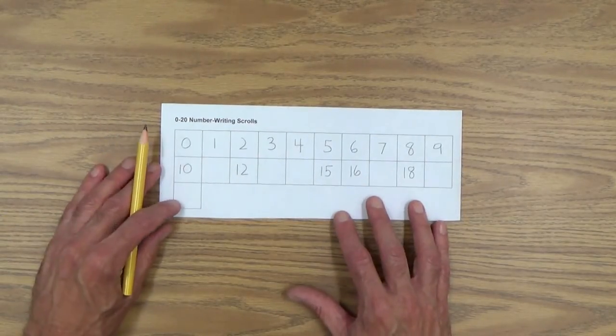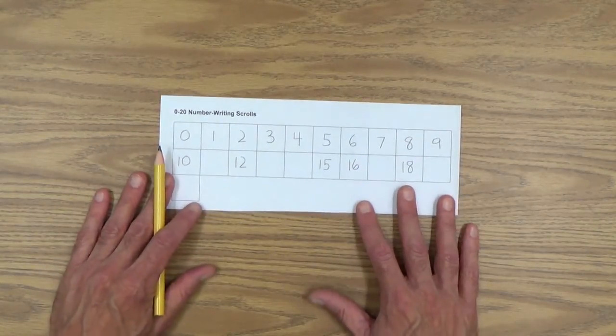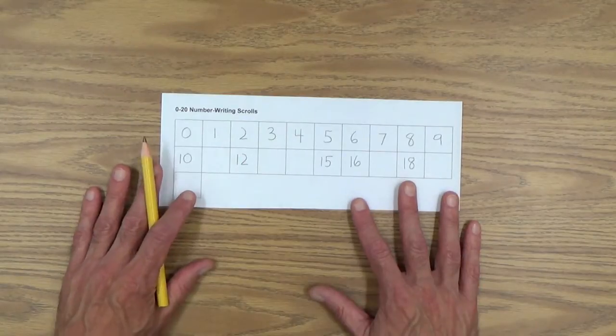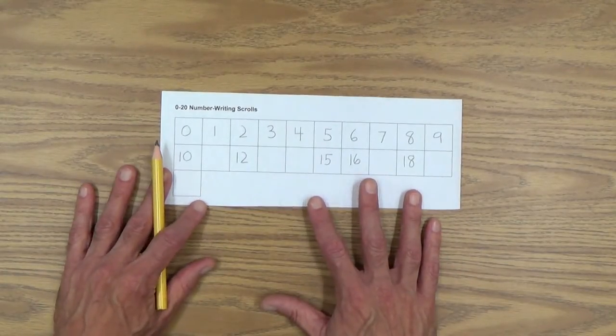So that's missing numbers. And of course, another way to find out how your child's doing with knowing the numbers, writing the numbers, not counting so much, but those two things.